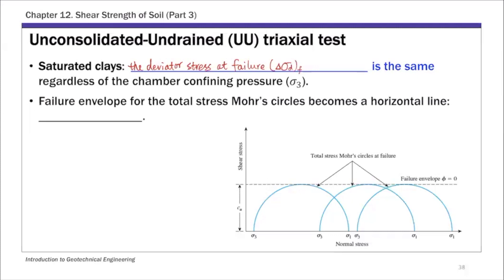Focusing on this picture, it shows the total stress Mohr circle at failure for three different specimens with three different σ3 values. Because for saturated clays the deviator stress at failure is the same regardless of σ3 and the chamber pressure — and Δσ_dF is defined as σ1 minus σ3, which is the diameter of the Mohr circle — the diameter of all three Mohr circles is the same. If you fit a failure envelope, a straight line to these three Mohr circles at failure, it will be a horizontal line, so the inclination angle φ — the total stress or undrained friction angle — is zero.